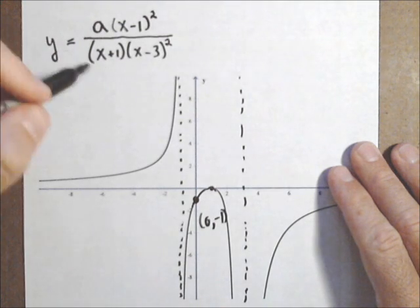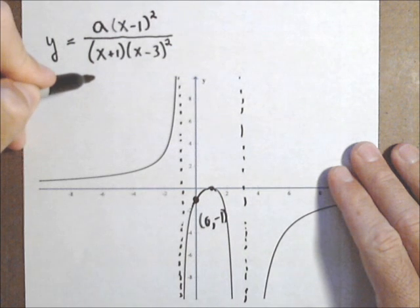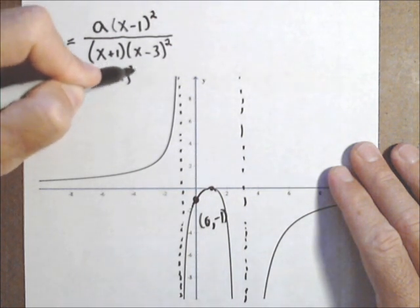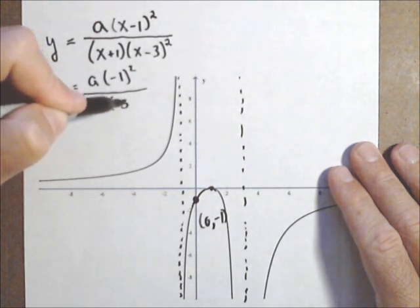So y equals, so we're going to plug negative one in for y, because it's the y value, and zero in for x. So we have negative one squared over one times negative three squared.